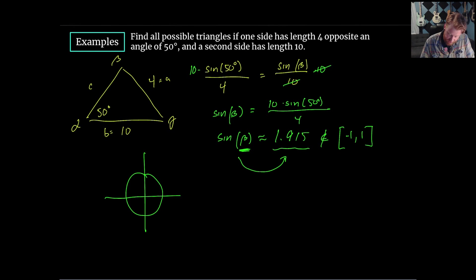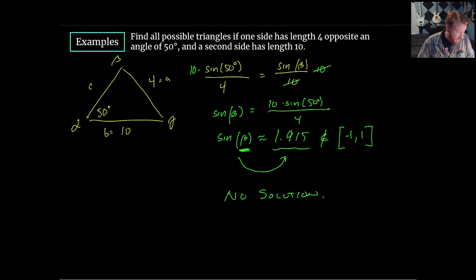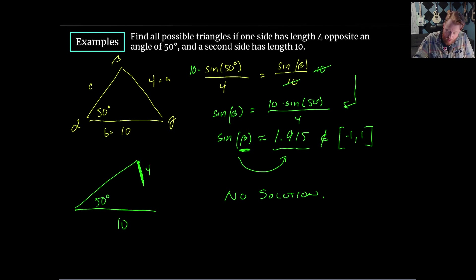No matter what angle you choose, we're never going to reach a sine value of 1.9. So there is no beta value that works, meaning there is no triangle meeting these properties — no solution. Geometrically, the side of length 4 is not long enough to reach the other side when the angle is 50° and the adjacent side is 10. The triangle simply can't close.